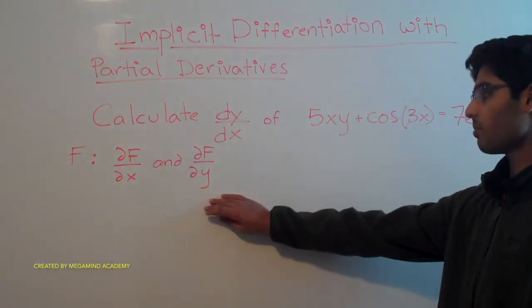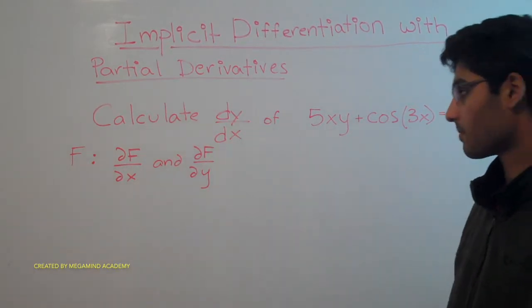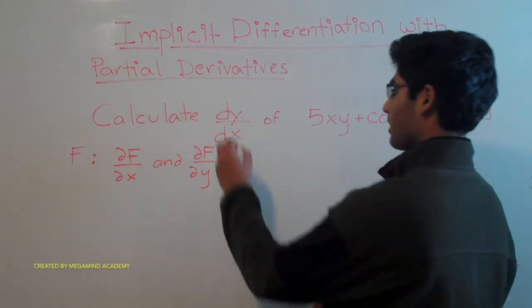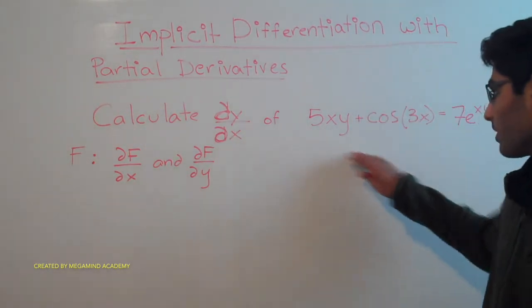So now that we have these two partial derivatives, what can we do to them to get dy/dx? And let's make those swirlies, because the function is comprised of both x and y's.